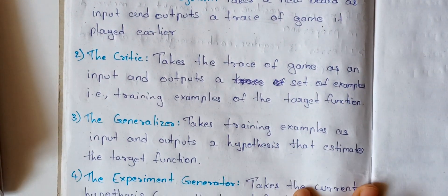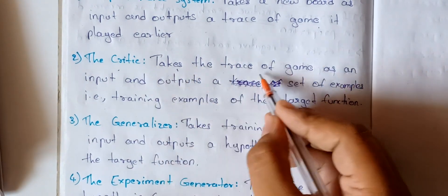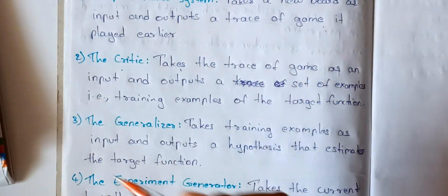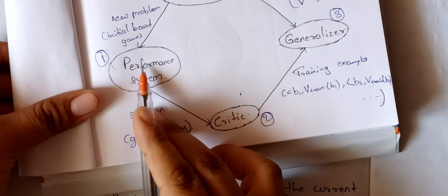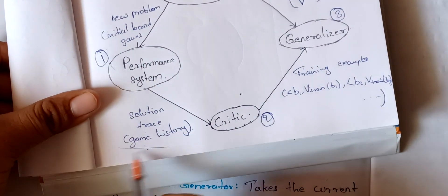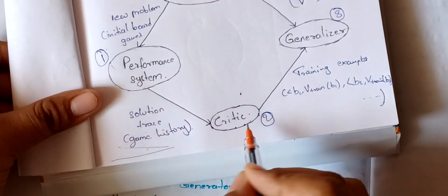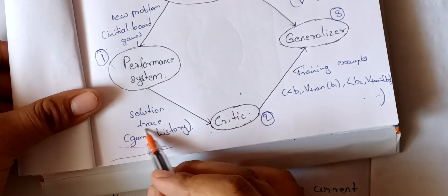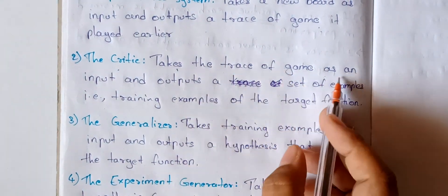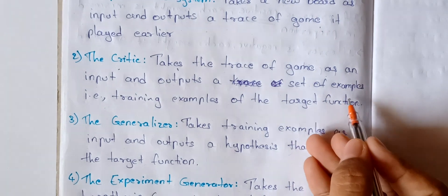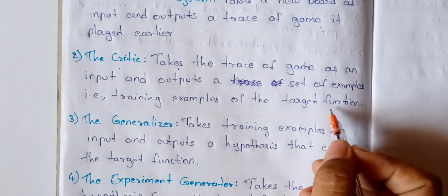Next, the critic takes the trace of games as an input and outputs a set of training examples of the target function.